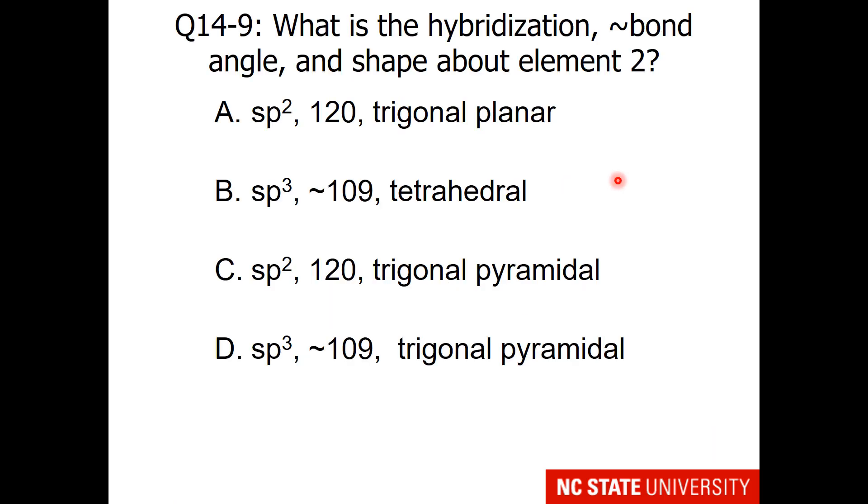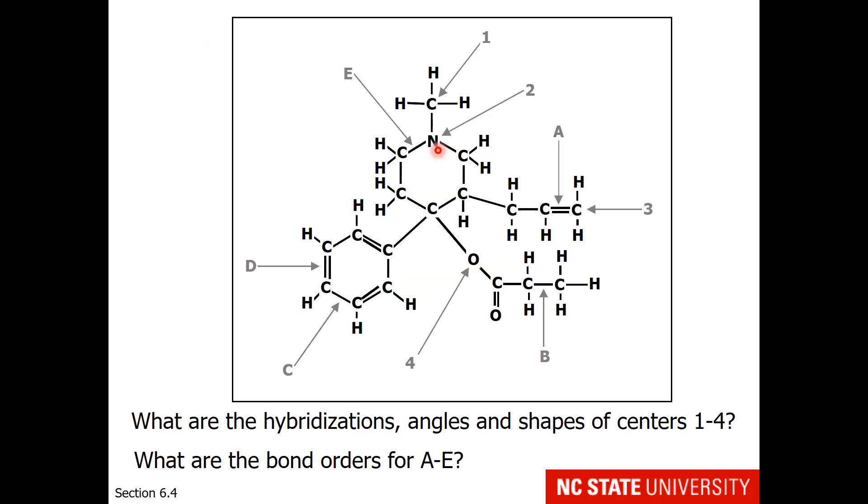The next question concerns element 2. So that would be this nitrogen here with 3 single bonds. But doesn't it seem to you like something might be missing? Doesn't this nitrogen need 8 electrons around it? So feel free to add the octet.